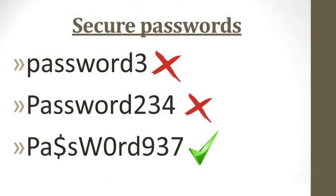Here we can see three types of passwords. The first one is crossed out — it is not a secure password because it does not have any capital letter or special symbol; it is written with only small letters. The second has capital and small letters, but the numbers are in a series and there is no special symbol. The third has capital letters, small letters, a special symbol, and numbers that are not in a series. So the third one is a secure, strong password.